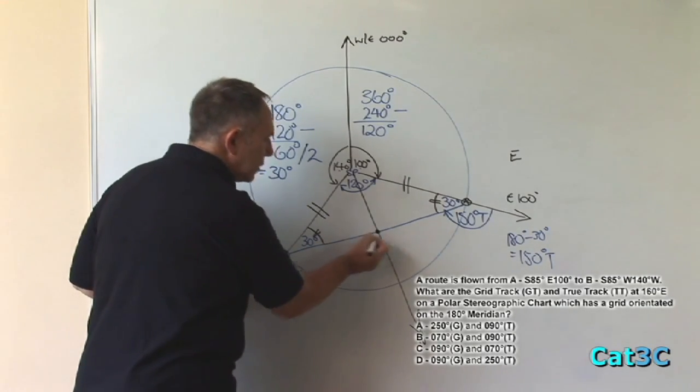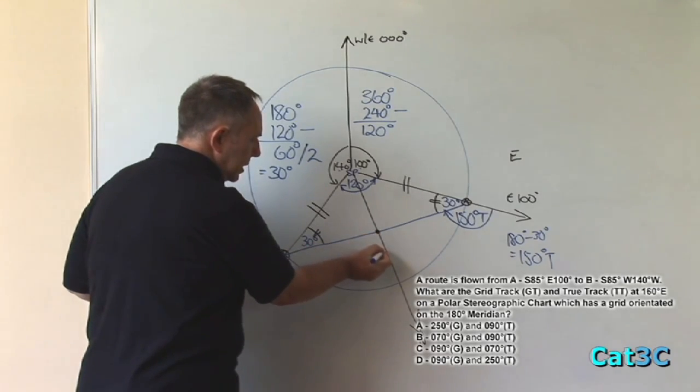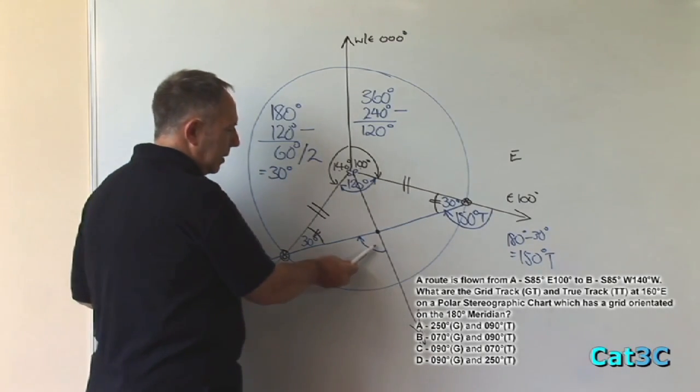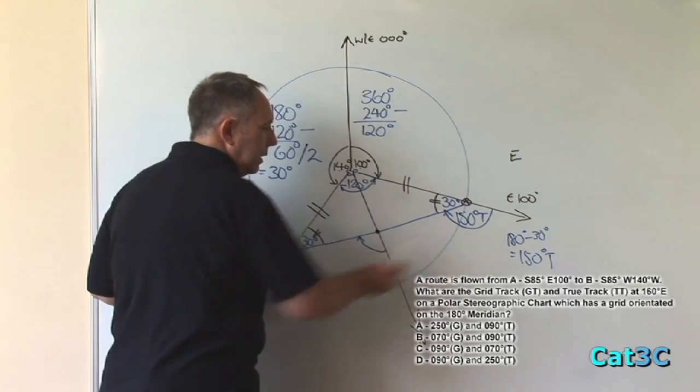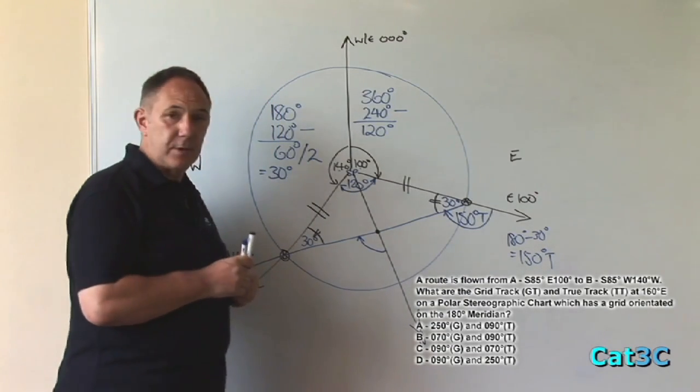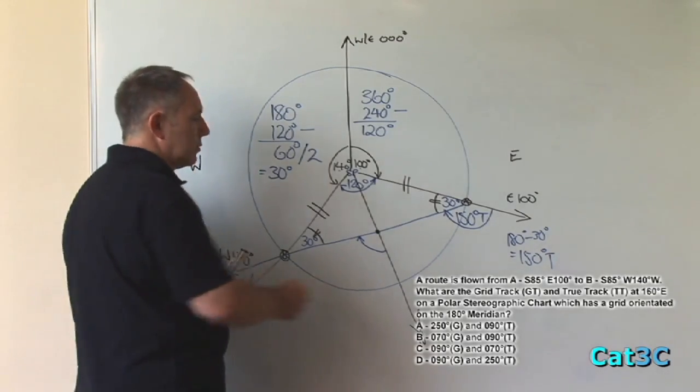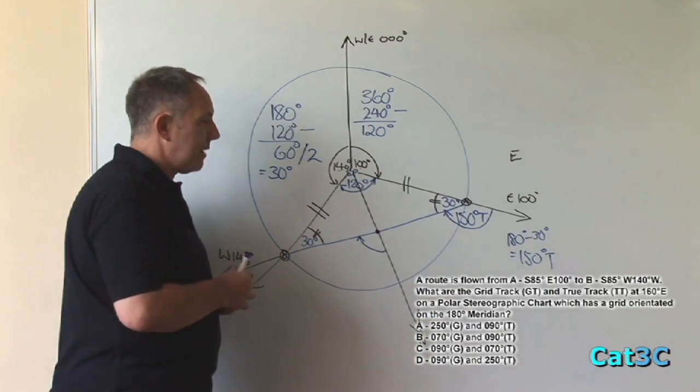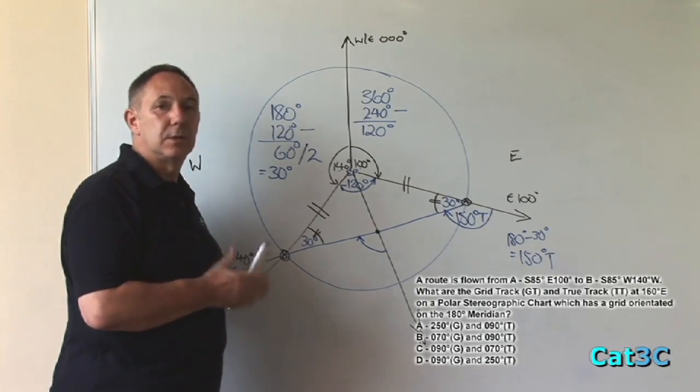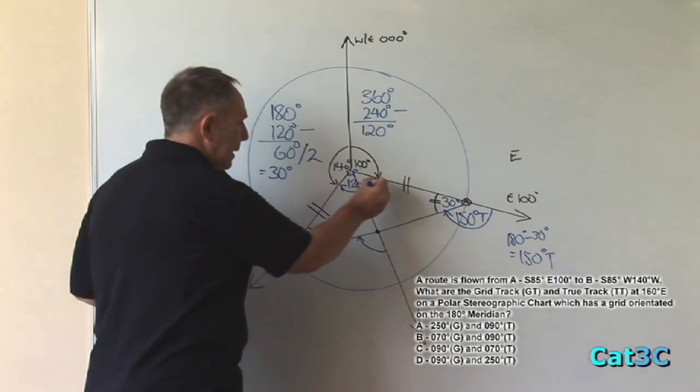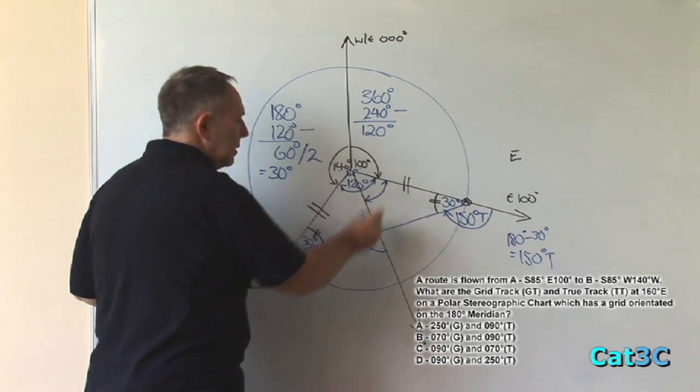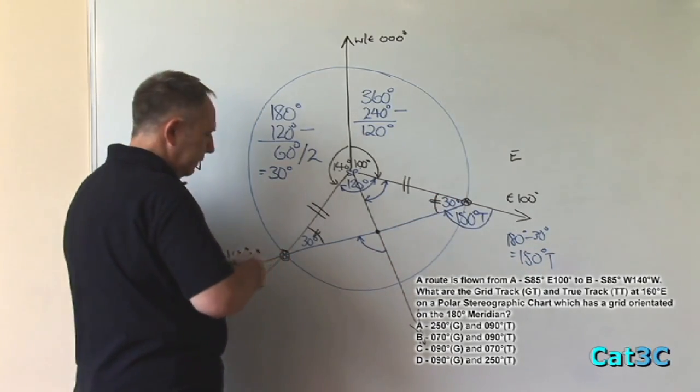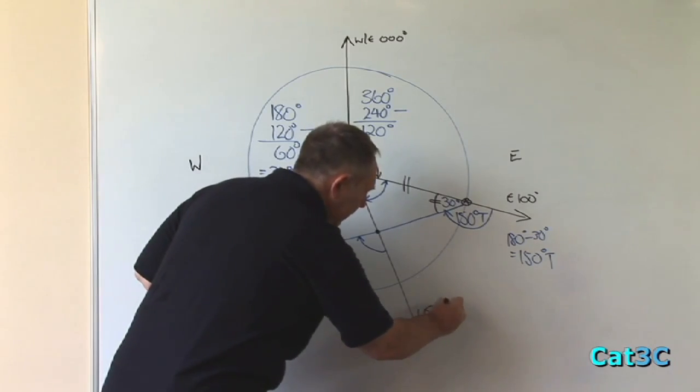The value of the true track at that point, come to the north side, go clockwise, is that angle. Now we can see that that angle is considerably smaller than that angle. What is the difference between them? The difference is convergency. The change in great circle track along the progress of the track is equal to convergency. On the polar stereographic chart, convergency is equal to change of longitude and change of longitude only. The change of longitude between A and this point, or east 100 and east 160, is 60 degrees.